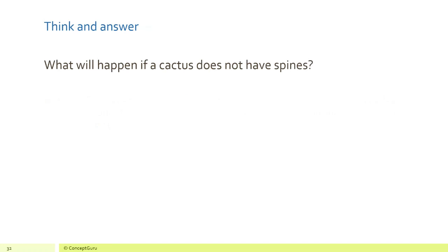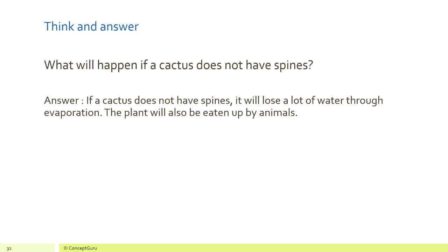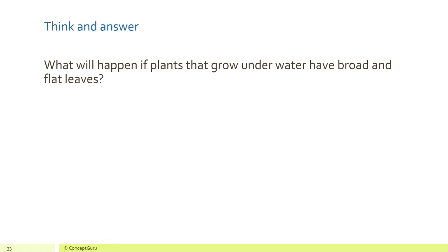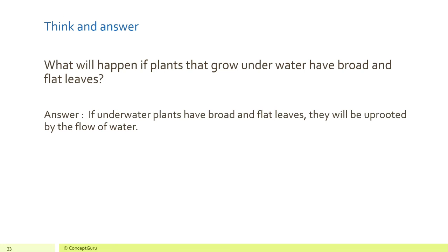Now think: what will happen if a cactus does not have spines? If a cactus does not have spines, it will lose a lot of water through evaporation if it has broad leaves, and the plant will also be eaten up by animals. What will happen if plants that grow underwater have broad and flat leaves? If underwater plants have broad and flat leaves, they will be uprooted by the flow of water and will not be able to survive.